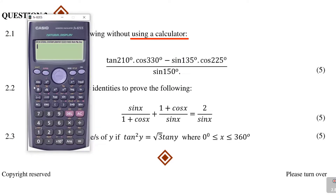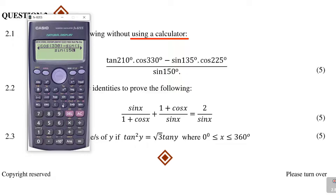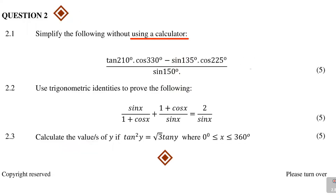They told us not to use a calculator, but that's where I need a calculator — just to know what the answer is. So I'll punch in: tan 210 times cos 330 minus sine 135 times cos 225, all over sine 150. Let's see what it gives me on the calculator. Equal to 2. So the answer is simply equal to 2. We have to get these five marks and prove it. You can actually restructure the question — you know the answer, now go towards the answer.